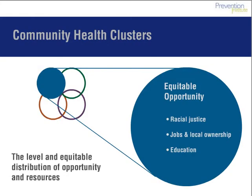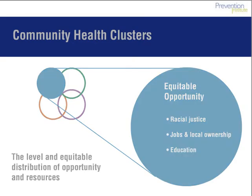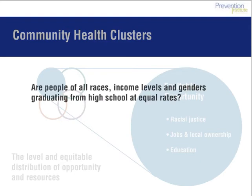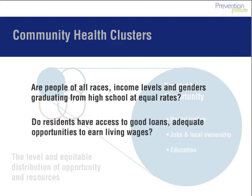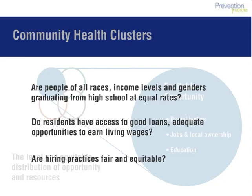The next cluster is equitable opportunity — the foundation for social, economic, and racial justice at the community level. It includes community factors related to the availability and quality of education, jobs, access to capital, and whether local institutions function in racially just ways. Examining how equitable opportunity relates to health outcomes requires asking important questions: Are people of all races, income levels, and genders graduating from high school at equal rates? Are they getting accepted to college at equal rates? Do residents have access to good loans and adequate opportunities to earn living wages? Are hiring practices fair and equitable? Is there income equality for people of different races and genders who hold the same positions? Research literature suggests that there is an association between income, education, and race, and health inequities.